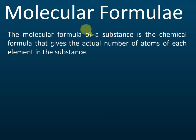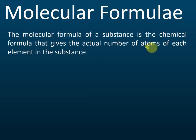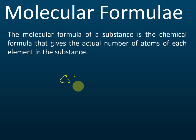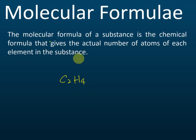Another type of chemical formula is the molecular formula. The molecular formula of a substance is the chemical formula that gives the actual numbers of atoms of each element in the substance. For example, C2H4 tells us the actual number of carbons and hydrogens in the molecule — this is called the molecular formula.